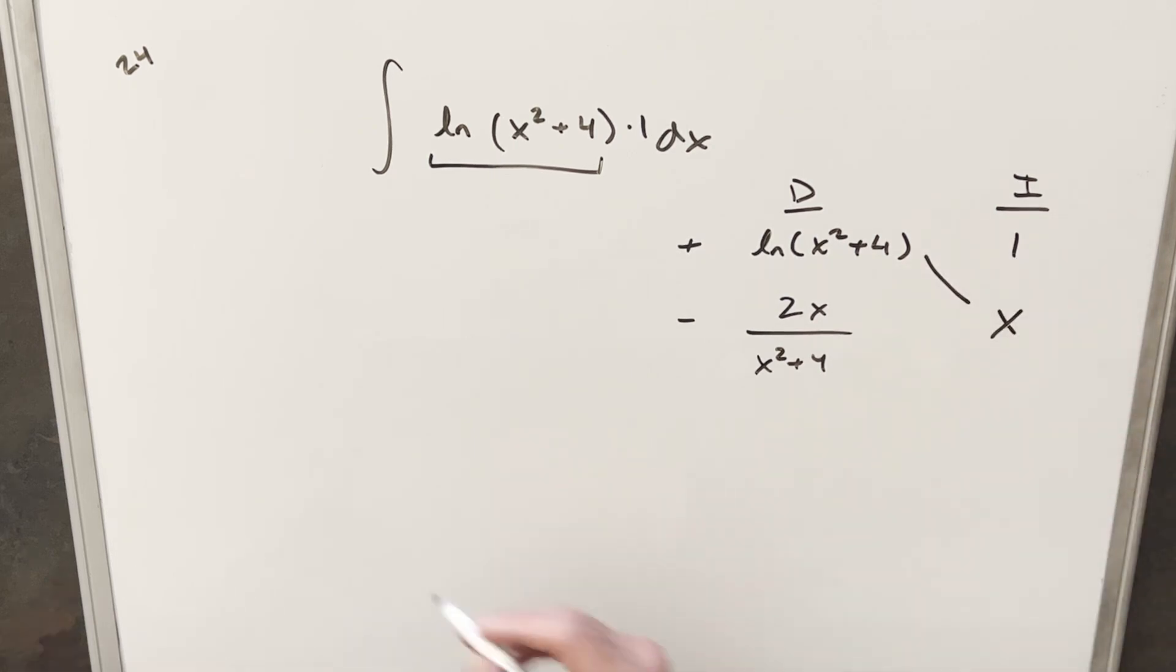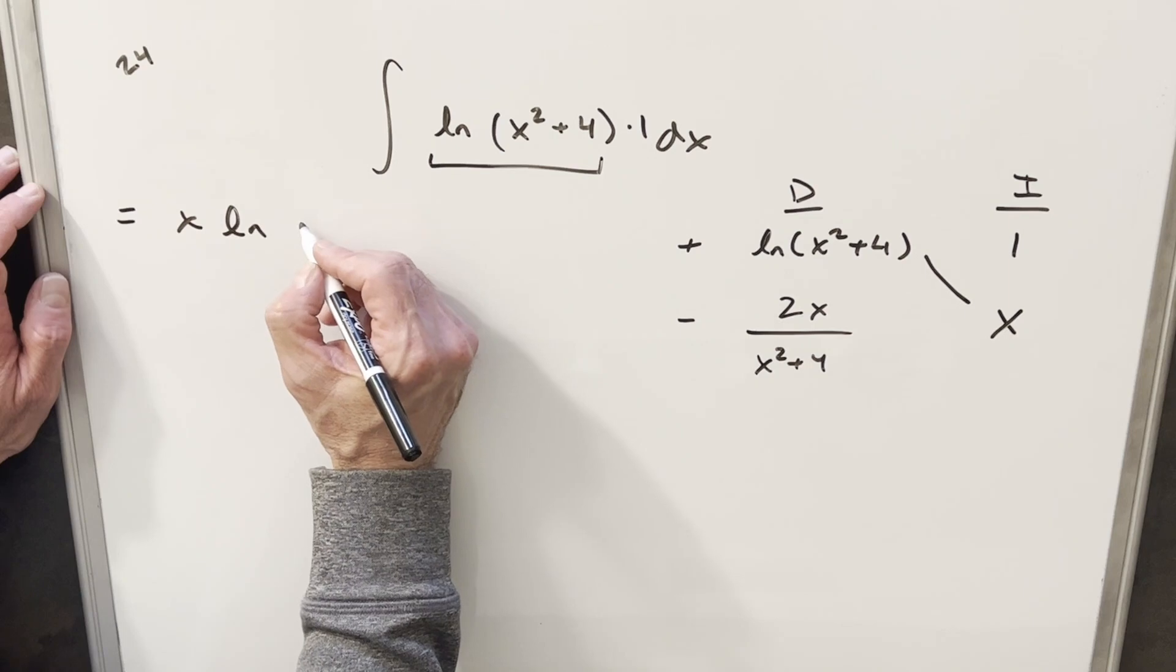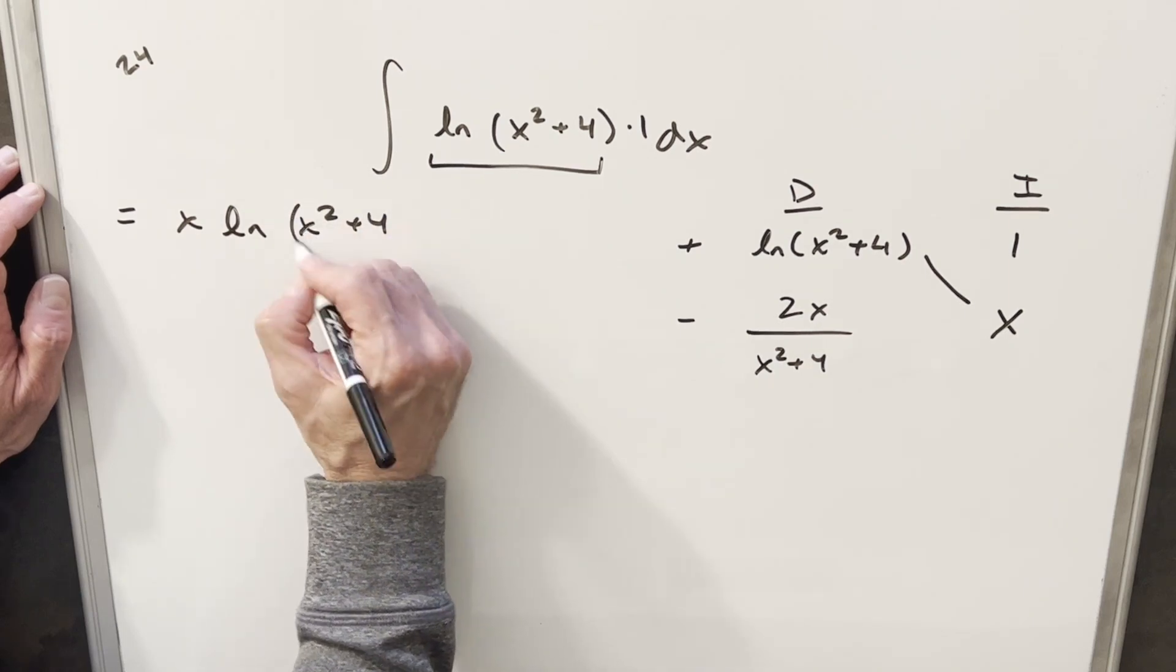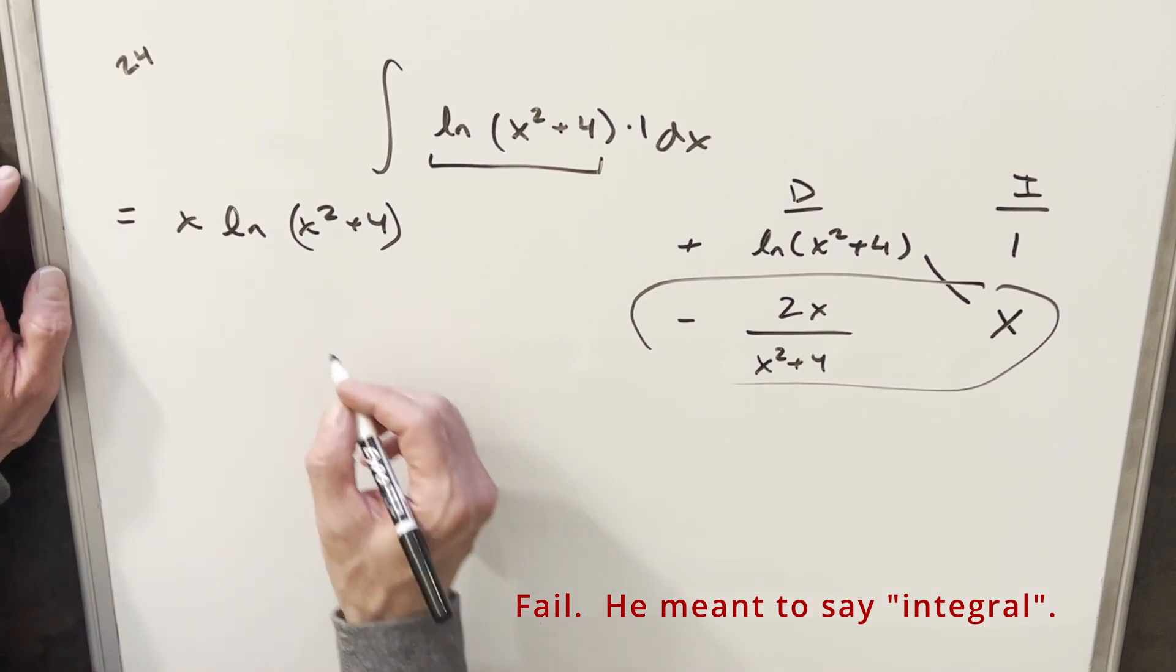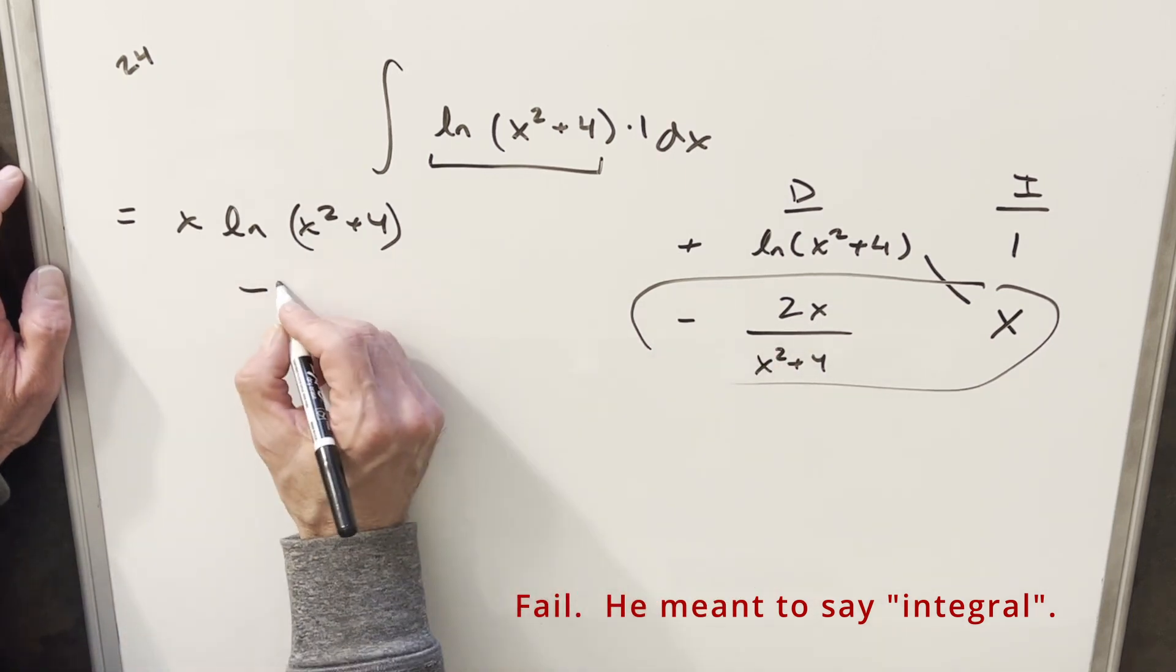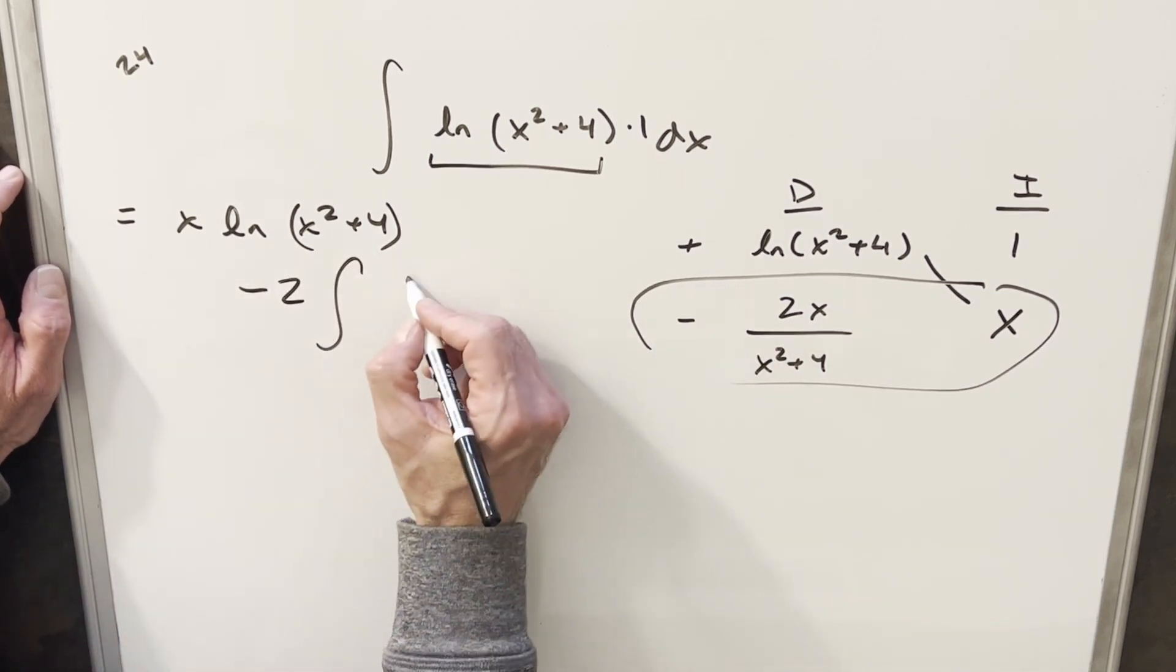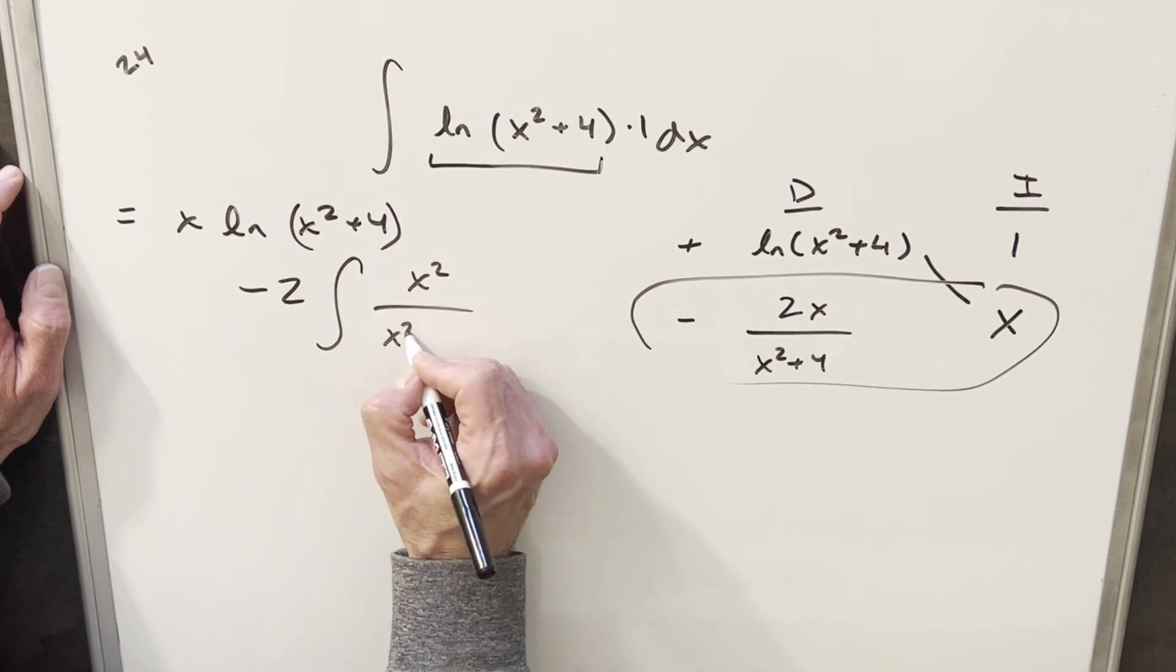So we have part of our solution right here on the diagonal, and let's write that. We'll have x natural log x squared plus 4, and then this piece is going to be a derivative. So I'm going to bring a minus 2 out front, and then we'll have x squared over x squared plus 4 here.